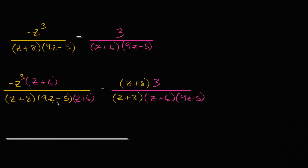So I'm going to have the same denominator. I'll just write it in a neutral color now. z plus eight times nine z minus five times z plus six.